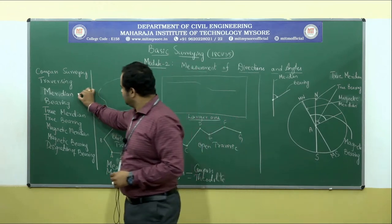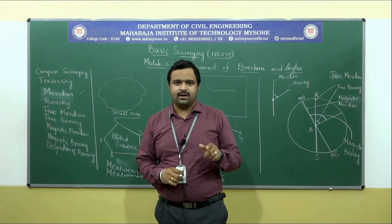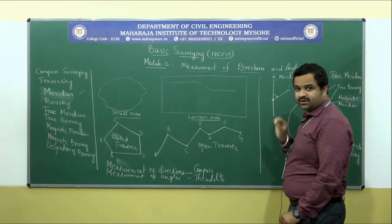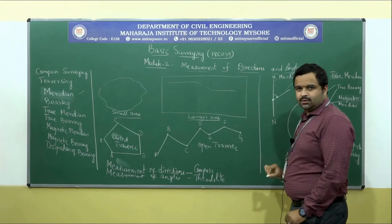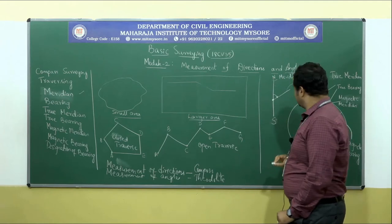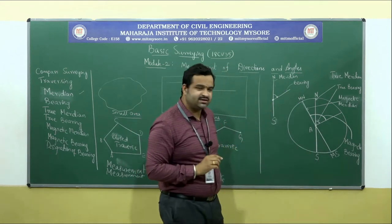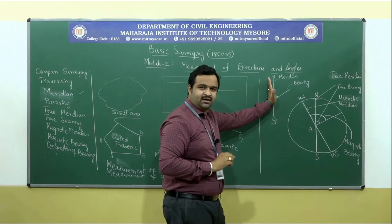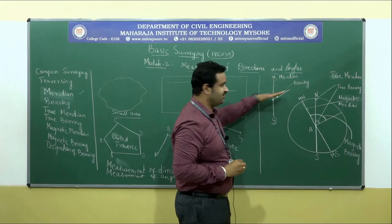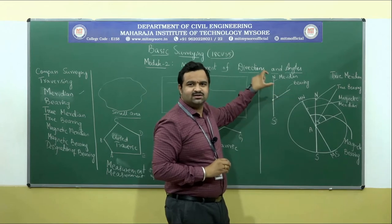Now let us move on to the next topic, that is meridian. What do you mean by meridian? Meridian is that reference line or geographic north and south pole of the earth. Meridian is nothing but the geographic north and geographic south of the earth. And the bearing — what do you mean by bearing? Bearing is nothing but that line whose direction is measured by taking this meridian as a reference line.